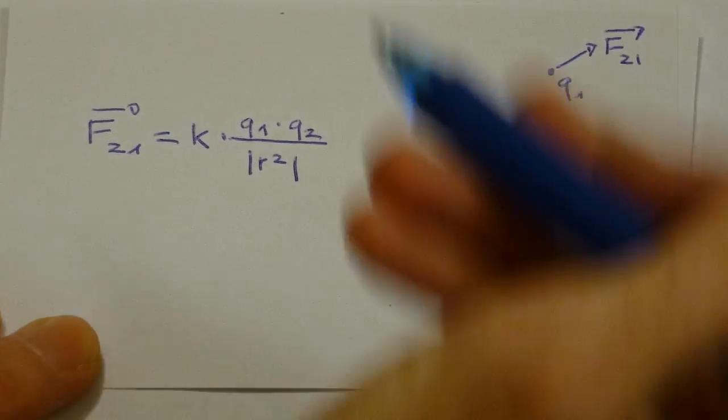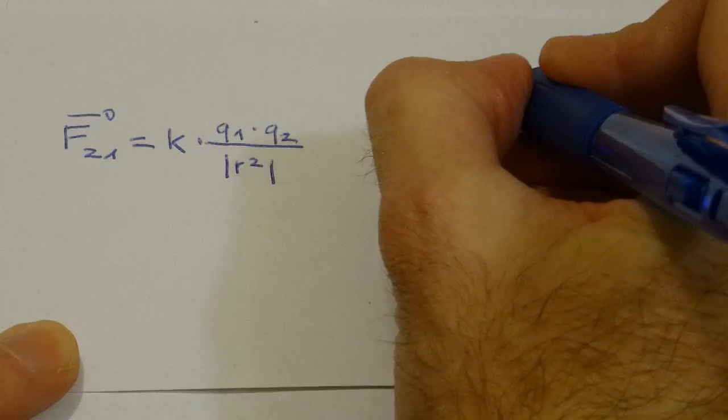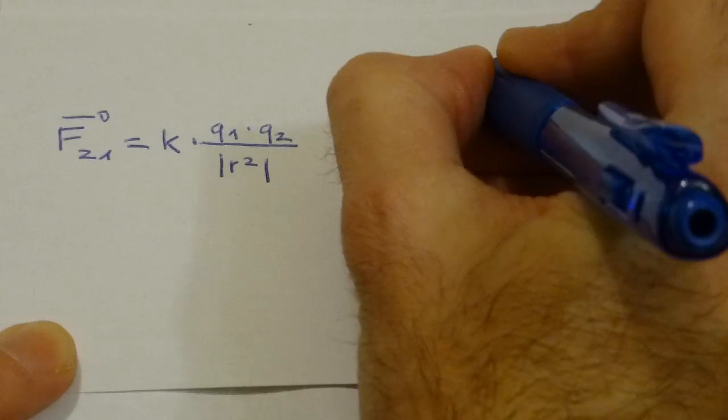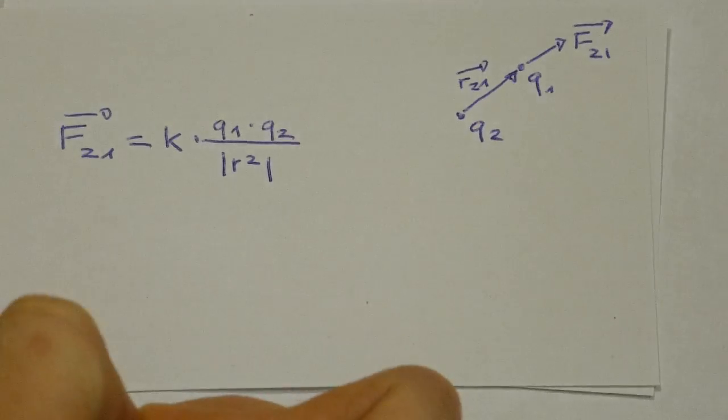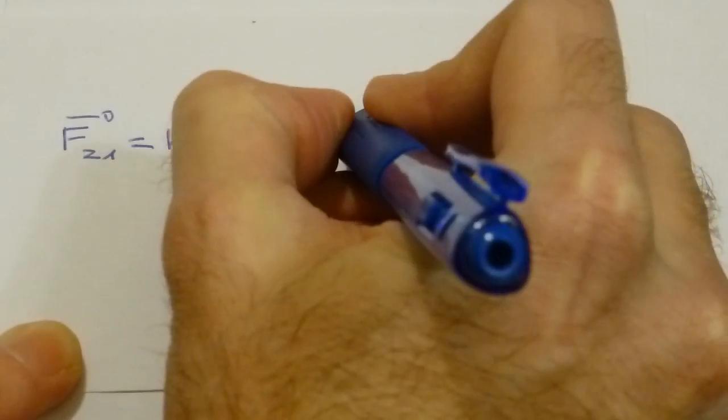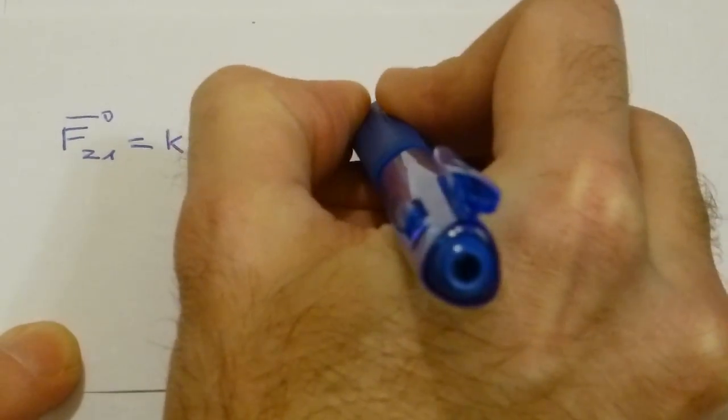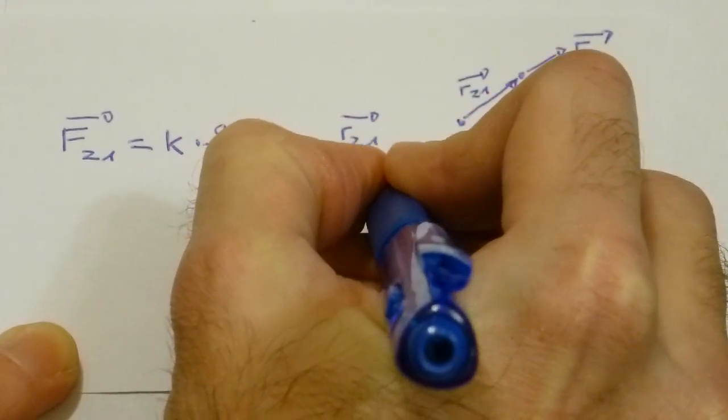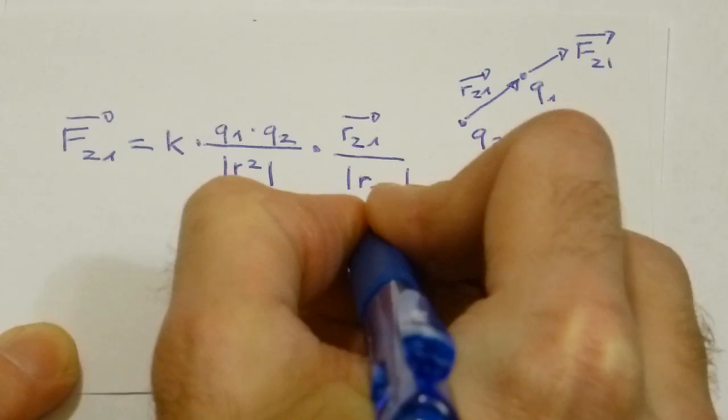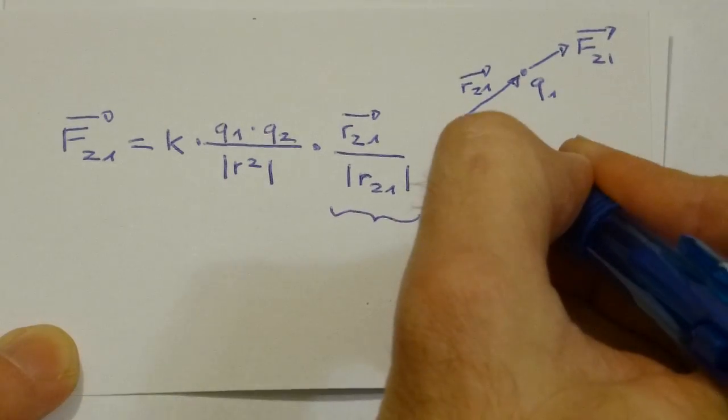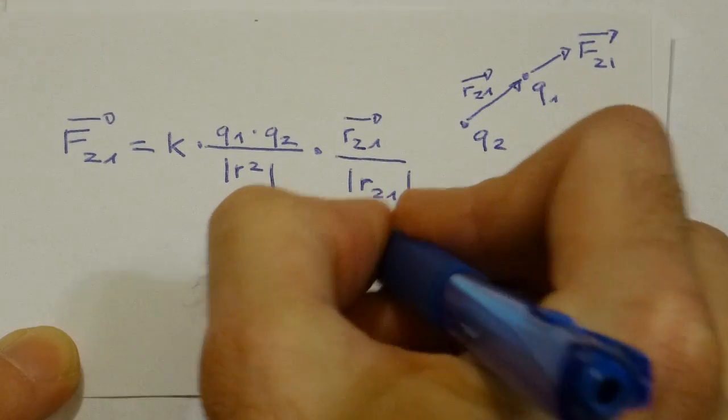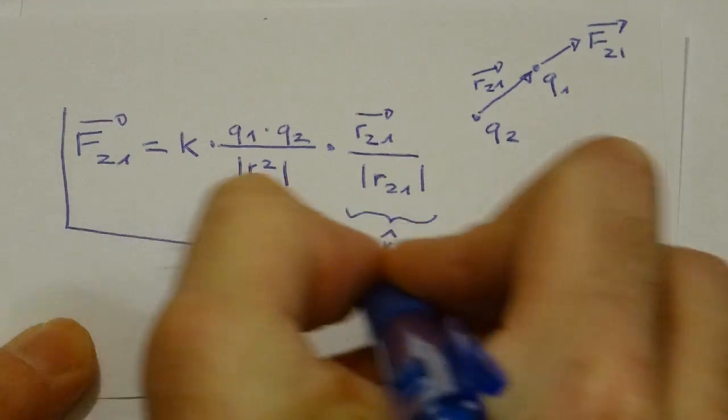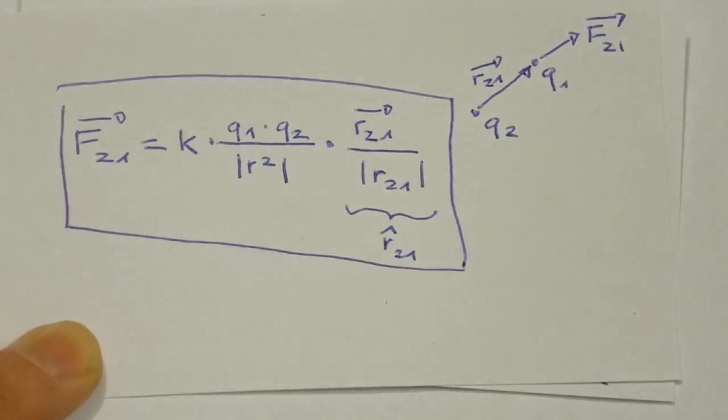The main direction in space we can use is the vector r from 2 to 1. We multiply the whole thing with that vector and divide it by the magnitude of that vector, so we get a unit vector in the direction along the axis from q2 to q1. And that's it. That is Coulomb's law as a vector equation.